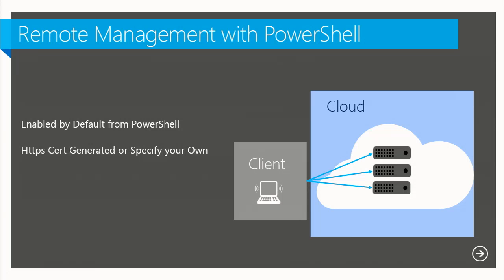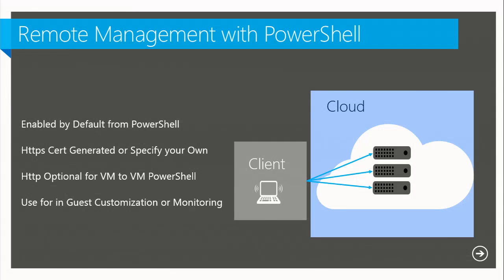HTTPS is optional — when the VM boots up you can configure it for HTTPS and HTTP. Over the public internet we'll only use HTTPS, but within your cloud service, VM to VM, you can enable HTTP if you want. The power of this feature is it gives you the ability to remotely monitor your VMs, log in via PowerShell, turn on performance counters, and also run scripts on startup. This gives you very similar functionality to startup scripts with cloud services — you can bootstrap the VM to provision services, install software, and do whatever you need.